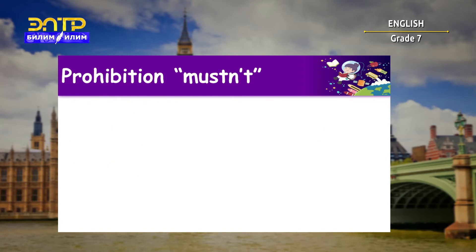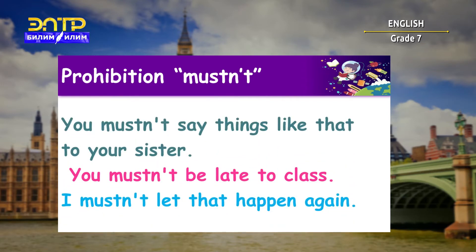We use 'mustn't' particularly when the prohibition comes from the speaker. For example, parent to child: You mustn't say things like that to your sister. Or, teacher to student: You mustn't be late to class. I mustn't let that happen again.